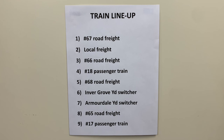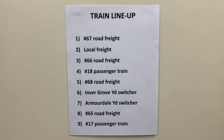This is an example of the train lineup that we review with the crews during our briefing session. We use two-man crews for all of the trains — a conductor and an engineer. The conductor wears the radio headset, has the radio, and does all of the communication with the dispatcher.